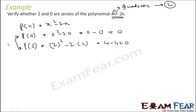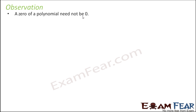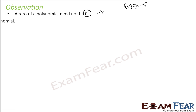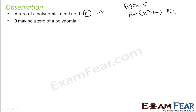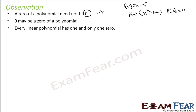Please note: a linear polynomial will have only one zero, a quadratic can have at most two zeros, and a cubic can have at most three zeros. We observe that the zero of a polynomial need not be zero — for example, x minus 5 has zero equal to 5. We also observe that zero may be a zero of the polynomial — for example, for x squared minus 2x, p(0) is also 0. Every linear polynomial has one and only one zero.